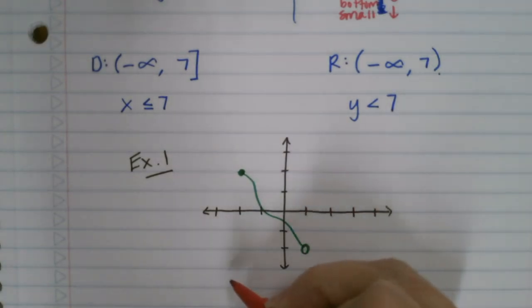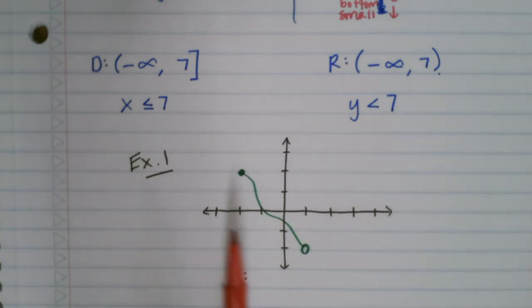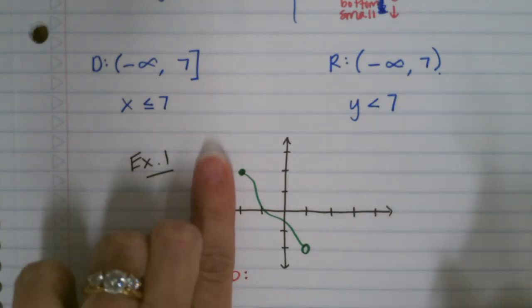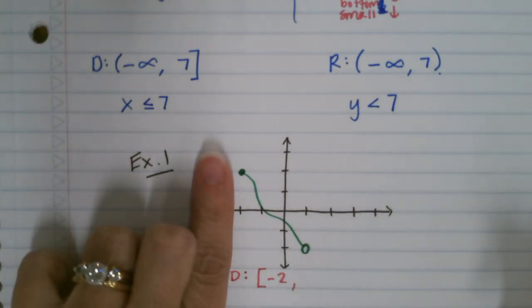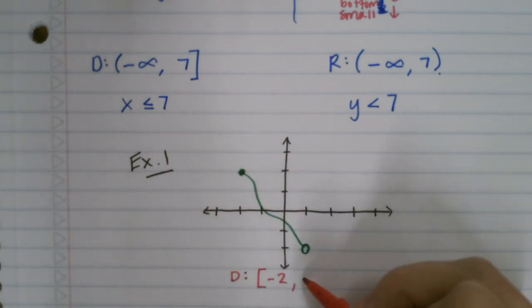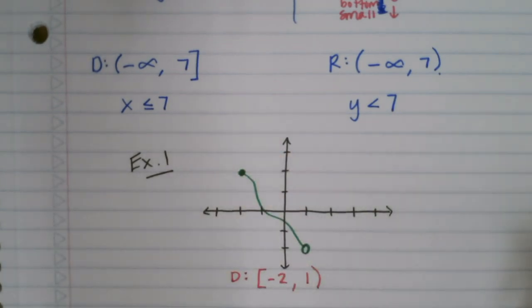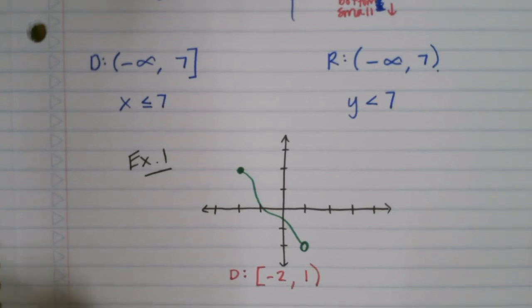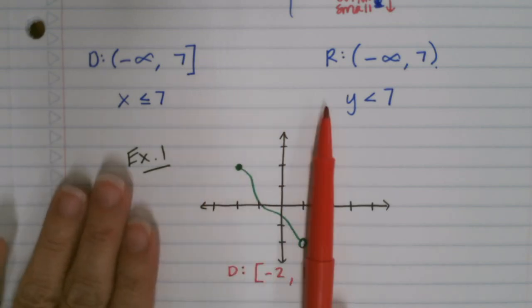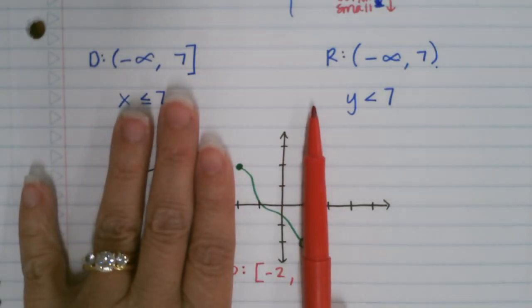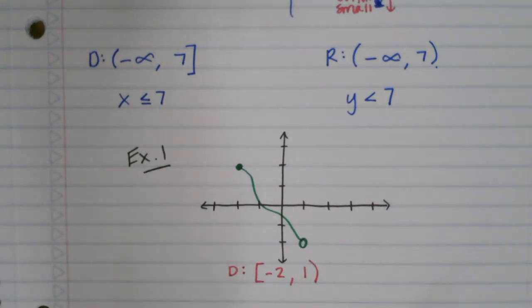So if we were asked to write the domain and the range on this, first off I'm going to write the domain. The domain again is going left to right, so it starts over here at negative 2 with a solid dot and it goes on until positive 1 with an open dot. So that's our domain, I'm going from negative 2 to positive 1. So the domain is talking about the x.